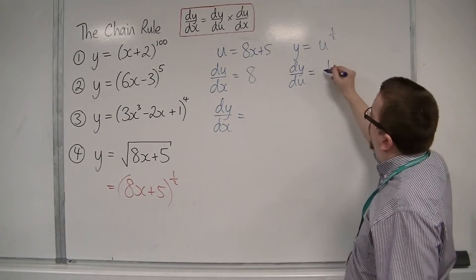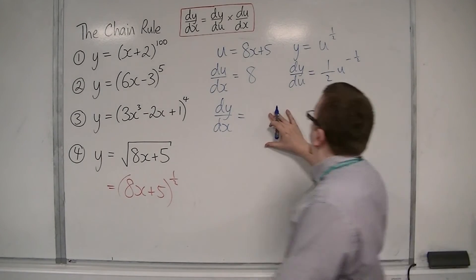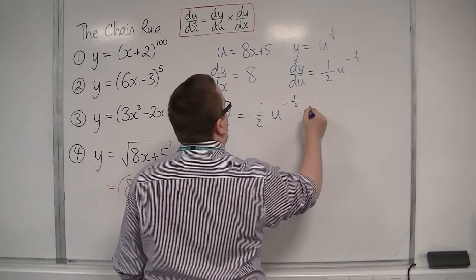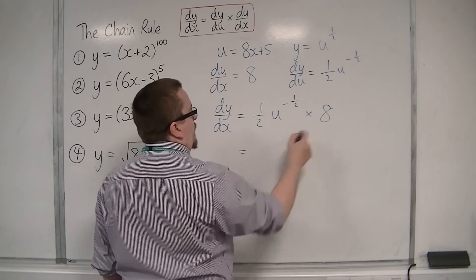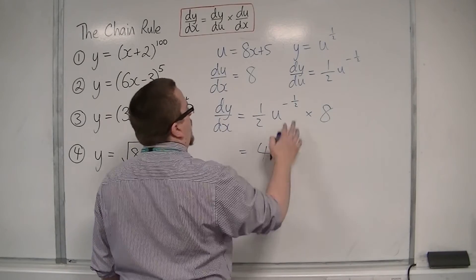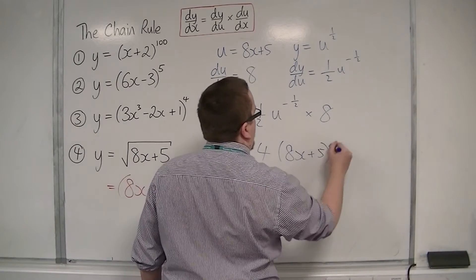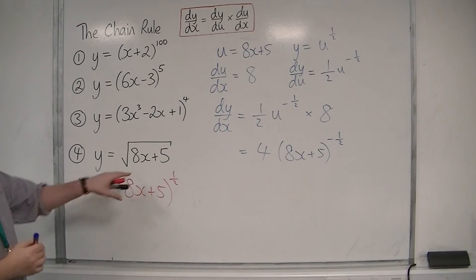dy by du is 1 half u to the minus a half. So dy by dx is dy by du, 1 half u to the minus a half, times du by dx which is 8. So 1 half times 8 is 4, u was 8x plus 5, and that's to the minus a half now.